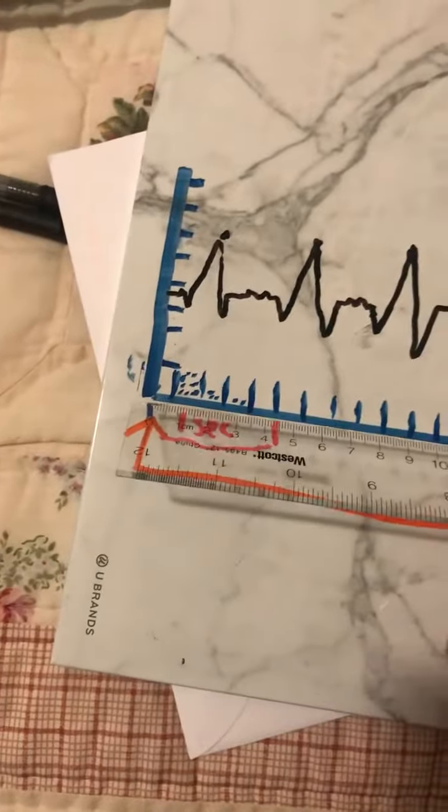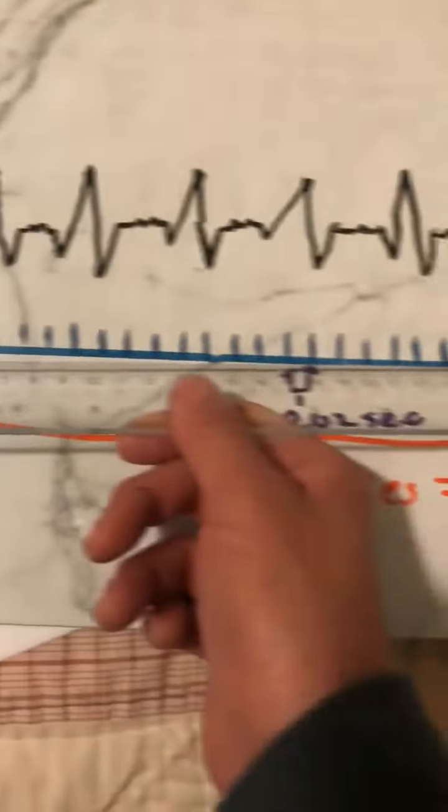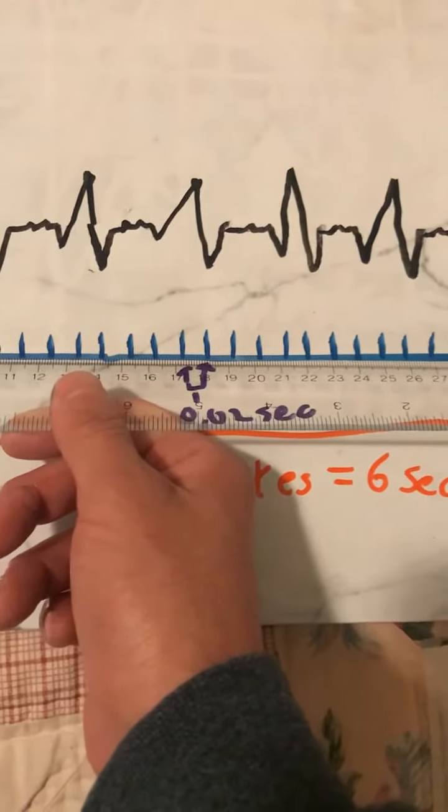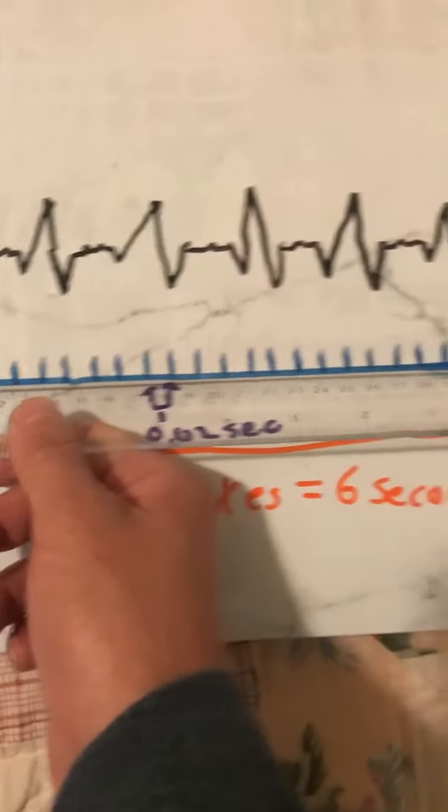As you can see if I put the ruler here, it's 30 centimeters because that's 30 big boxes. So that's kind of my representation.